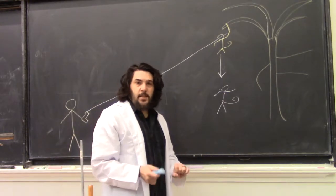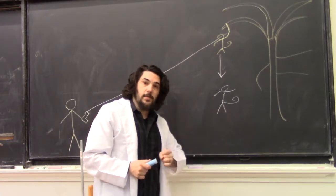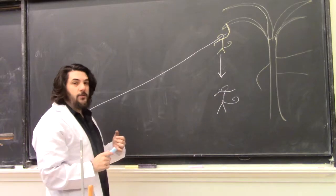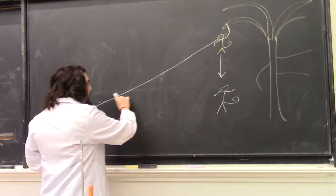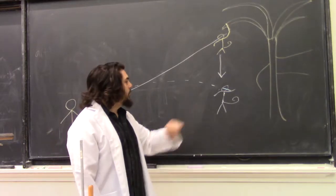What the monkey doesn't understand is because the bullet is under the exact same effects of gravity that the monkey is, when they are both in freefall, or in the bullet's case ballistic trajectory, the bullet is going to lose the same amount of height that the monkey will.